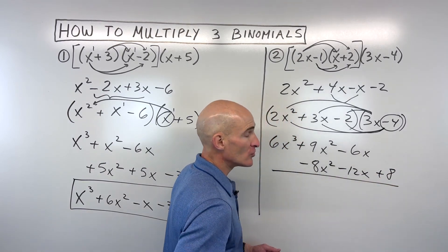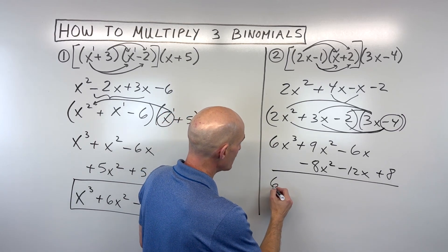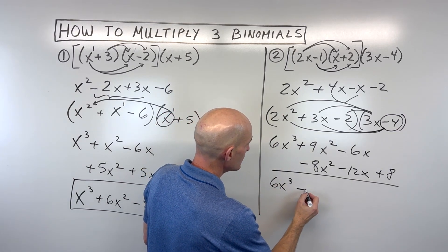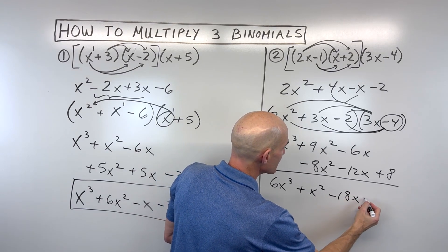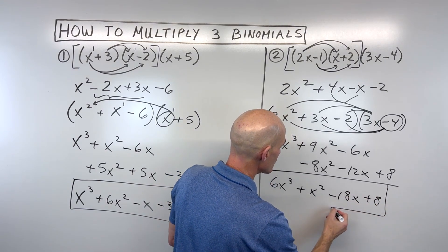Okay, so all we have to do now is just combine like terms. I'm just going to add straight down here. 6x cubed plus x squared minus 18x plus 8 is our final result.